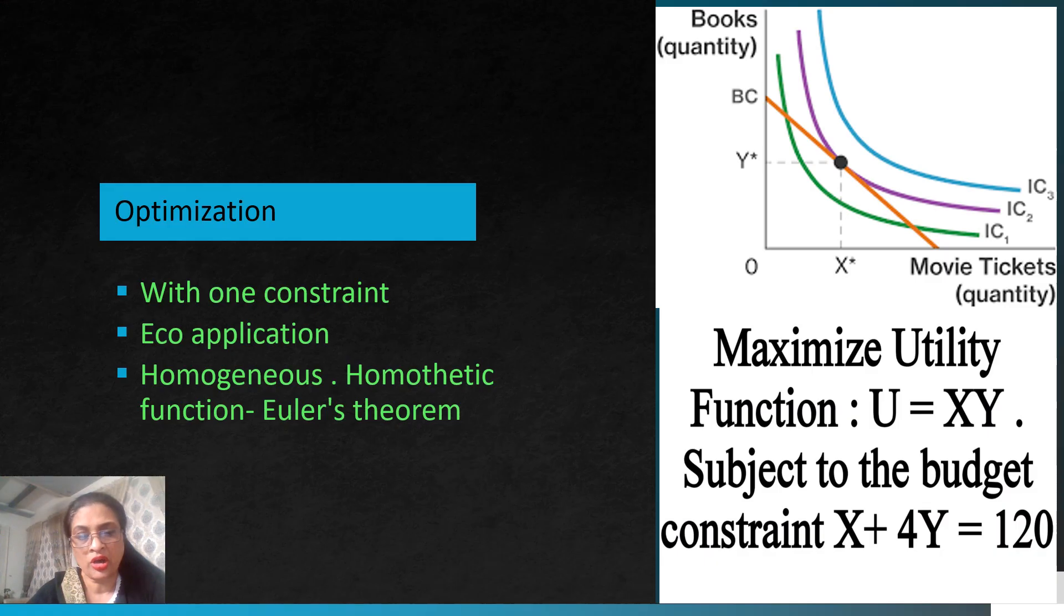Moving on, optimization you must have done in your Econ 103 course, where you have learned how to maximize utility subject to budget constraint or how to minimize cost subject to production constraint. You work out with the Lagrangian multiplier technique, and every time you use the Lagrangian, you keep on adding one Lagrangian multiplier and you calculate the value from the equations.